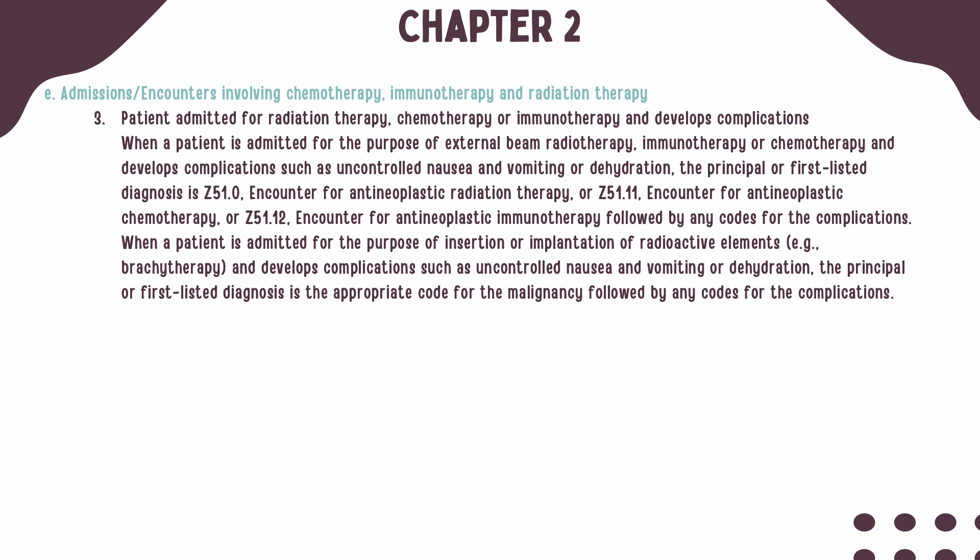If the patient is admitted for chemo, immuno, or radiation therapy and they develop complications such as controlled nausea or vomiting, you should assign a code for the therapy, such as Z51.0, Z51.11, or Z51.12, followed by codes for any complications. If the patient is admitted solely for the insertion or implantation of radioactive elements such as brachytherapy and they develop complications, the first listed diagnosis should be the malignancy, followed by any complications. Code Z51.0 should not be assigned, as brachytherapy is not an external beam radiation therapy.